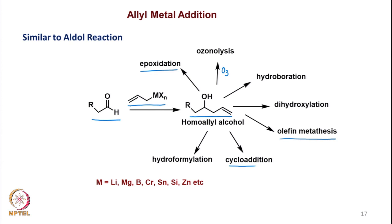These types of substrate scopes and reaction scopes are numerous. So what is this M in allyl-MXn? M can be lithium, magnesium, boron, chromium, tin, silicon, zinc, etc. Many of these have been studied and depending on which kind of metal is used, there are different types of reaction parameters, and the stereoselectivity or regioselectivity depends on various factors. We will look at a few of them in this particular course.